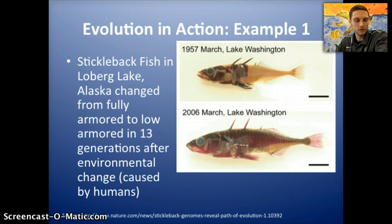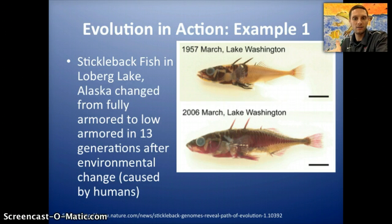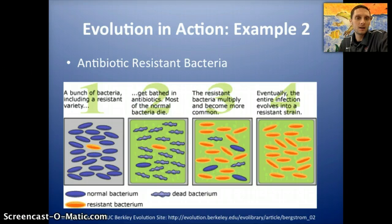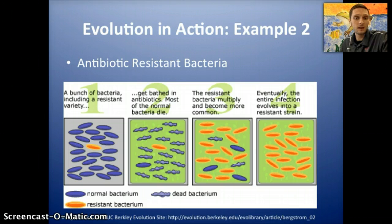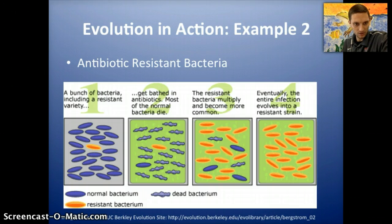So over a number of generations — and you're actually able to see this in collecting samples — the alleles that caused body armor changed within the population so that the fish no longer had full body armor. Another great example is found in bacteria. We use antibiotics as a way to kill bacteria. Over time, more and more bacteria are becoming resistant to antibiotics, and this has become a big cause for concern for humans and livestock moving forward. This image, also from UC Berkeley, has a great example and really shows how that happens.